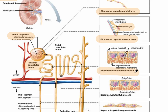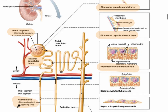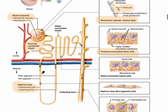The next part of the renal tubule is called the nephron loop, also called the loop of Henle. There's a region that descends down into the renal medulla and then it ascends.